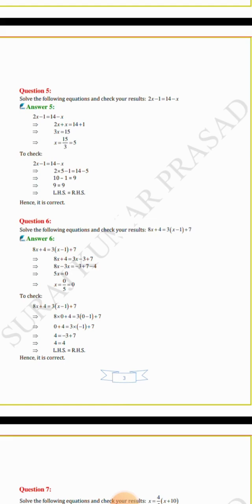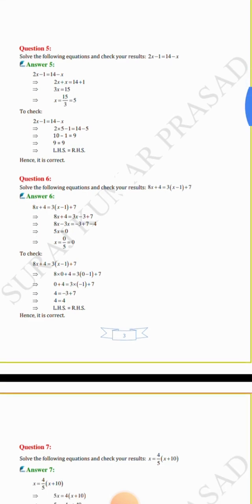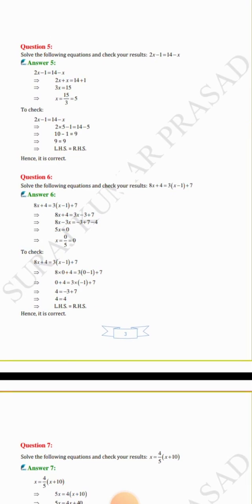Question number 6: solve 8x + 4 = 3(x − 1) + 7. Expanding the bracket: 3 × x = 3x and 3 × (−1) = −3, so 8x + 4 = 3x − 3 + 7. Then 8x minus 3x equals minus 3 plus 7 minus 4, giving 5x equals 0. So x equals 0 by 5; since 0 divided by any number is 0, x equals 0.